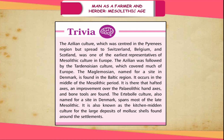The Azilian culture, centred in the Pyrenees region but spread to Switzerland, Belgium, and Scotland, was one of the earliest representatives of Mesolithic culture in Europe. The Azilian was followed by the Tardenosian culture, which covered much of Europe. The Maglemosian, named for a site in Denmark, is found in the Baltic region and occurs in the middle of the Mesolithic period — it is there that hafted axes, an improvement over the Paleolithic hand axe, and bone tools are found. The Ertebølle culture, also named for a site in Denmark, spans most of the late Mesolithic and is also known as the kitchen midden culture for the large deposits of mollusk shells found around the settlements.